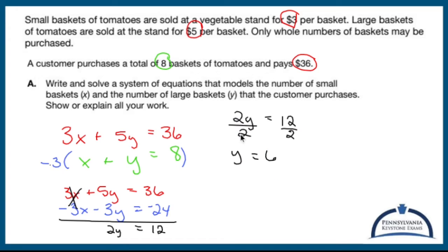That means this person bought six large baskets. Now I need to find out what x is, and common sense would tell us we know what x is, but let's use this bottom equation because it looks nicer. And rewrite the bottom equation replacing the y with 6 because I know that y is 6.